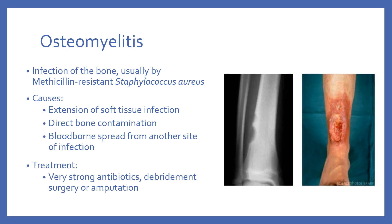Osteomyelitis is an infection of the bone. The usual causative bacteria is methicillin-resistant Staphylococcus aureus, or MRSA, which is an antibiotic-resistant bacteria. Osteomyelitis can occur from a soft tissue infection or a pressure injury that has spread to the bone, from direct bone contamination through trauma, surgery, or open fractures, or from sepsis — a blood infection — that has spread to the bone. In that case, the infected bone usually has some prior trauma or defect, as it is not common for sepsis to infect healthy bone.